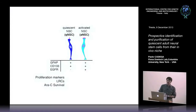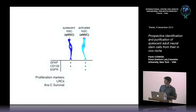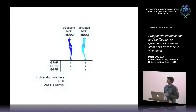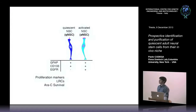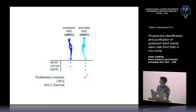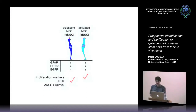In summary, by using a combination of markers we were able to distinguish between these two populations: quiescent neural stem cells lack proliferation markers, are label-retaining cells, and survive AraC treatment, while activated neural stem cells are enriched in proliferation markers.